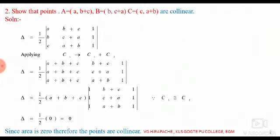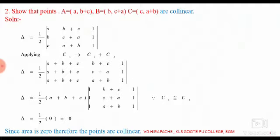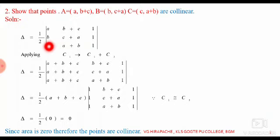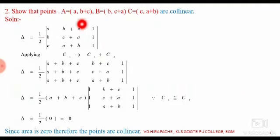Moving to the next question: show that the three points A = (a, b+c), B = (b, c+a), and C = (c, a+b) are collinear. To show collinearity, we show that the area of the triangle formed by these three vertices is zero. Applying the formula: Δ = 1/2 times the determinant with rows (a, b+c, 1), (b, c+a, 1), (c, a+b, 1). If Δ = 0, the points are collinear.